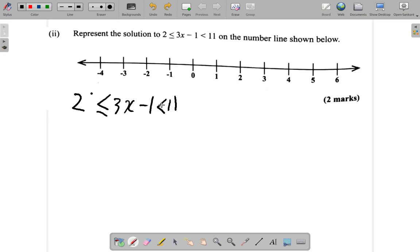Suppose we add 1 to all three sides. You will have 2 plus 1 is less than or equal to 3x minus 1 plus 1 is less than 11 plus 1. I said to add 1 in order to get rid of this negative 1 here. Later on, I want to get rid of the 3 so that I will have x alone by itself.